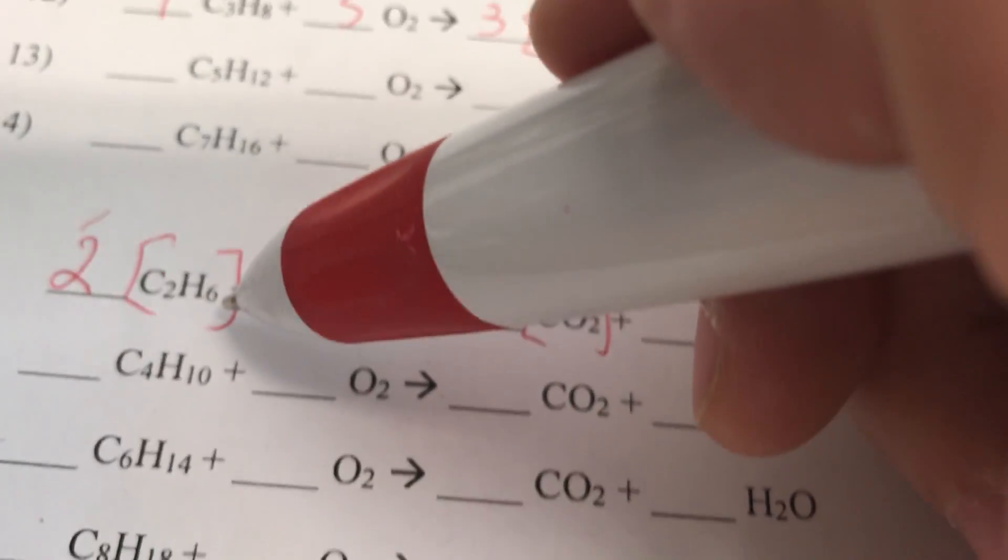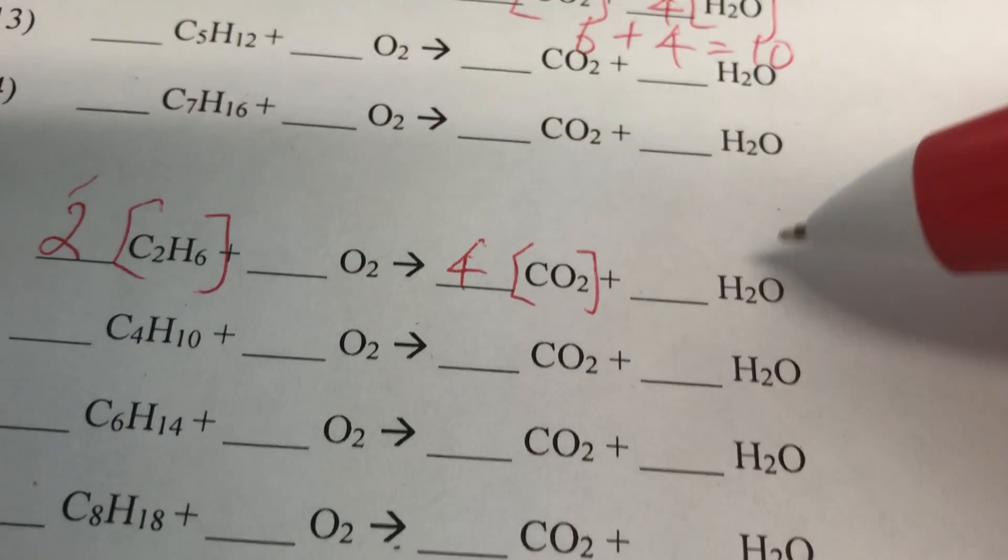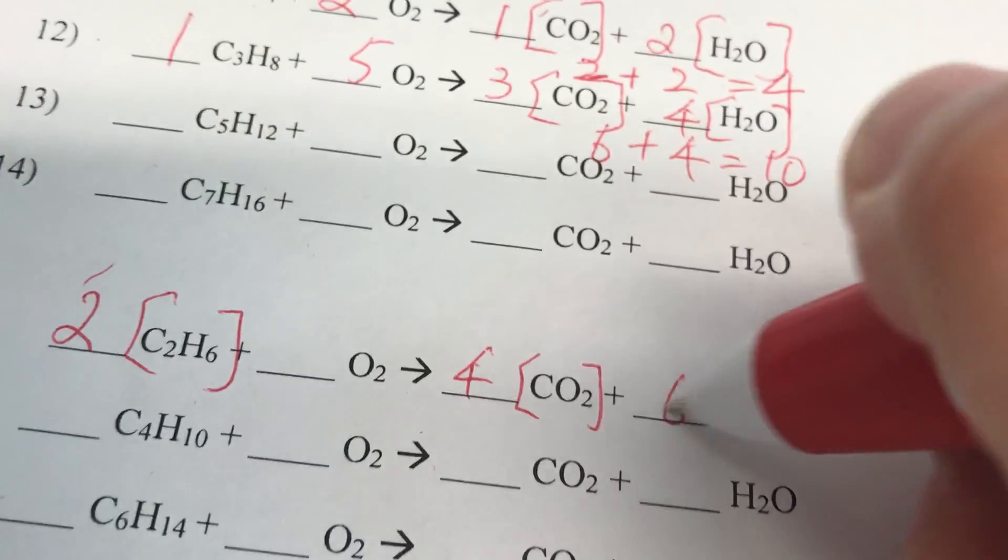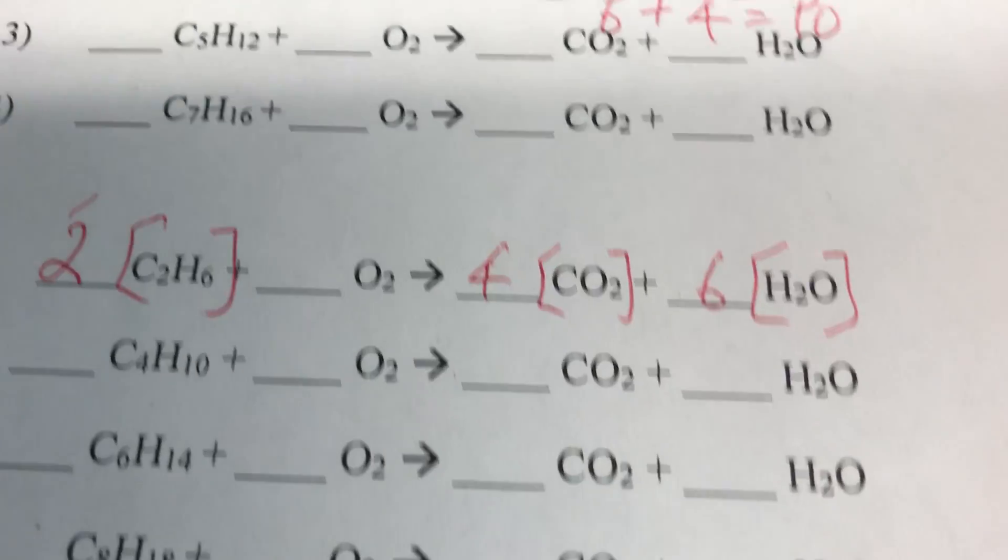Next is hydrogen. Hydrogen is 2 times 6 is 12 hydrogen. Here is only 2 hydrogen. So I have to put 6 around and put bracket around water. So hydrogen is also balanced.